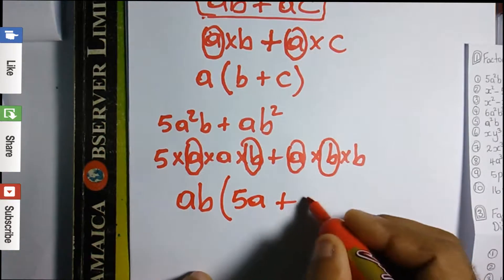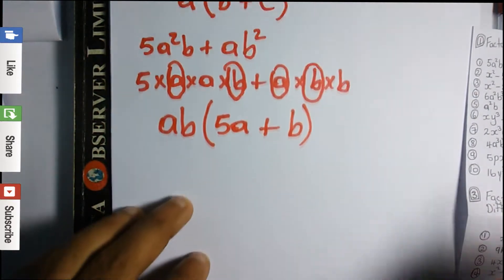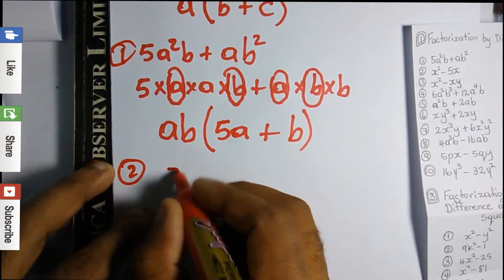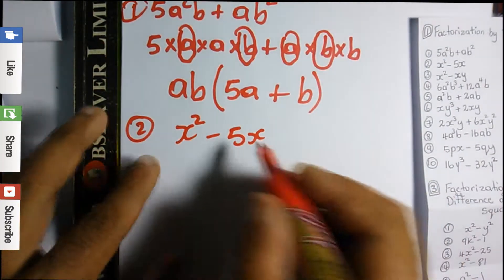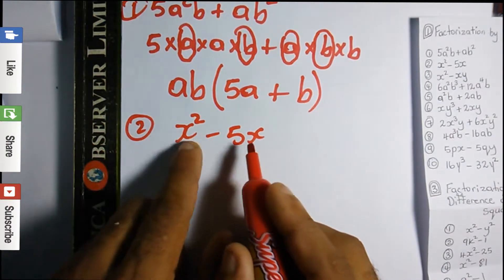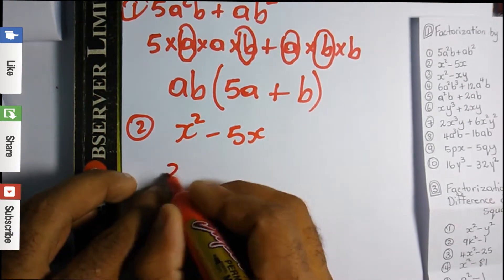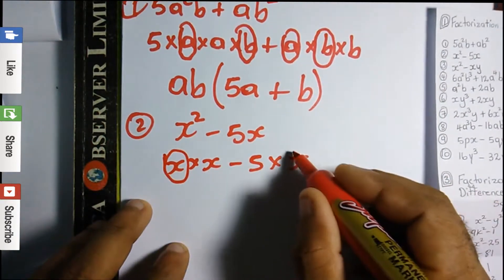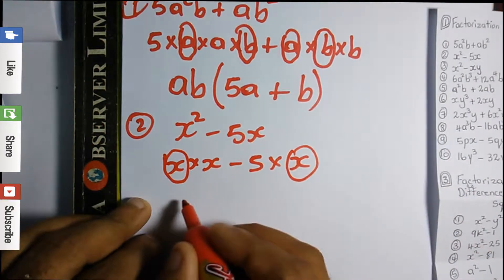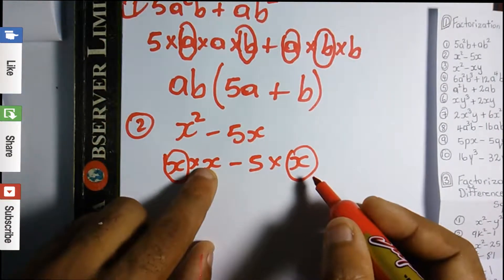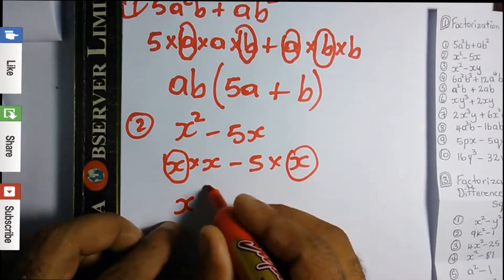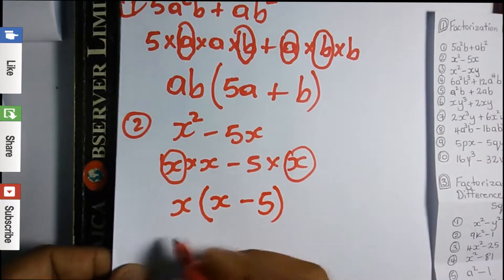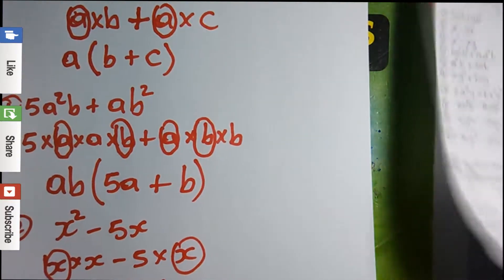Question 2: we have x² - 5x. Same procedure — expand to x times x, minus 5 times x. Look at both sides to see what is common: x is common on both sides. We don't have any more common factors, so we write x open bracket, and what remains is x - 5. The answer is x(x - 5).